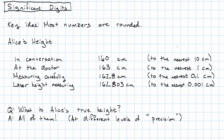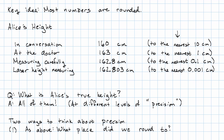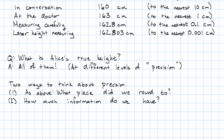One way to think about the precision of a number is by asking what place we rounded off to. Another way to think about the precision of a number is to ask how much information does it give us.